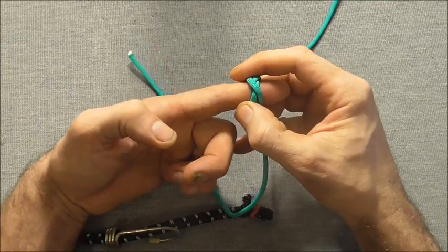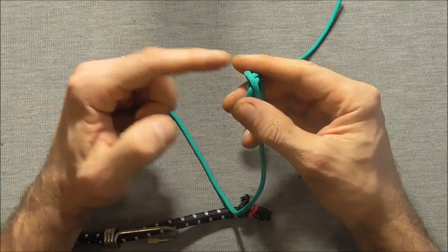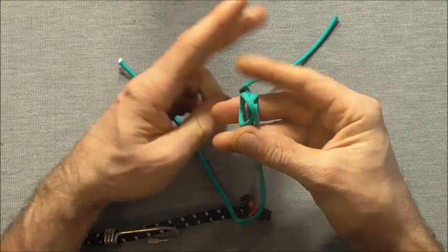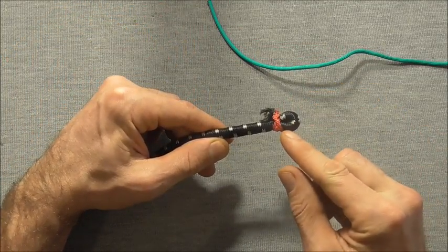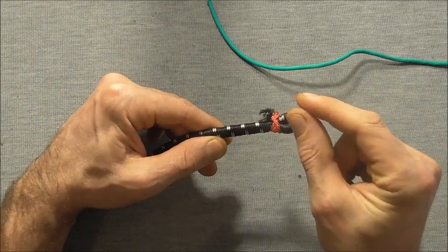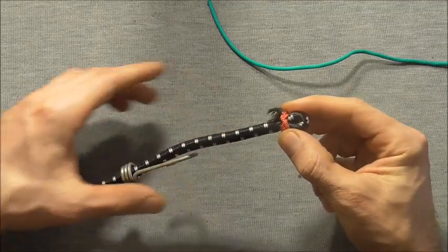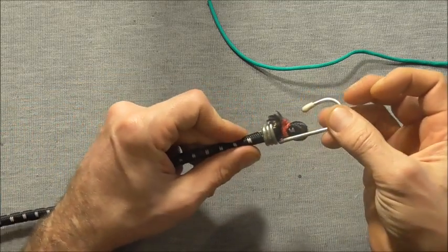The constrictor knot is a really useful knot as its name suggests it binds down really tight around objects. Here I've used it on a piece of bungee which I've just folded over and then tied the constrictor knot around so I could form a stopper knot.